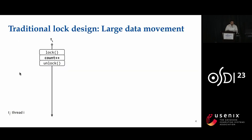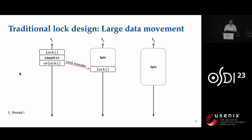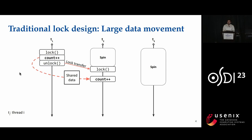The application developer writes code using the lock and unlock API. The code within this API is called a critical section and it protects access to shared data. In this example, we have a critical section which is incrementing a counter. Now we have two other threads contending for the same lock. The first thread gets the lock and the other two threads keep spinning while waiting to acquire it. The first thread executes its critical section, then calls unlock to transfer the lock to the second thread. When the second thread wants to execute its critical section, the shared data has to move from thread one to thread two. This movement of shared data causes an increase in critical section execution time, which affects application performance.